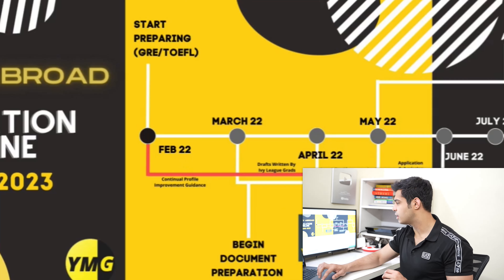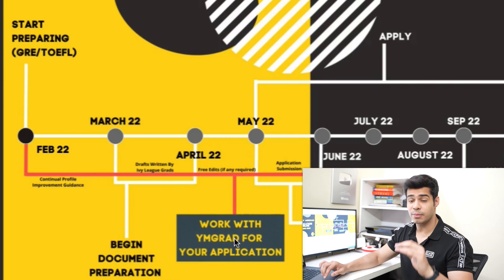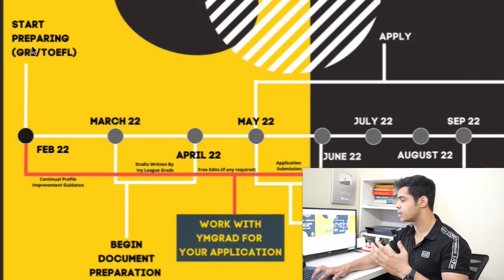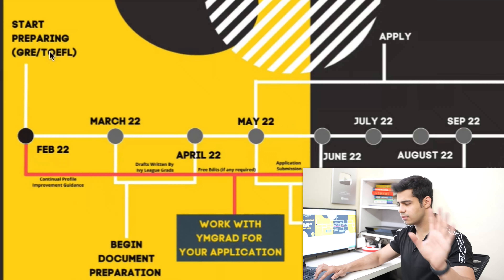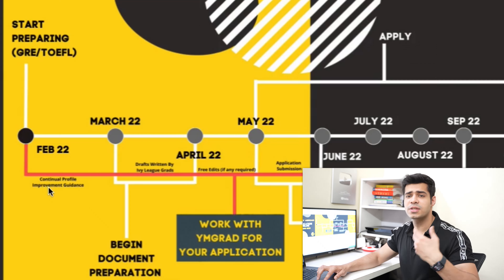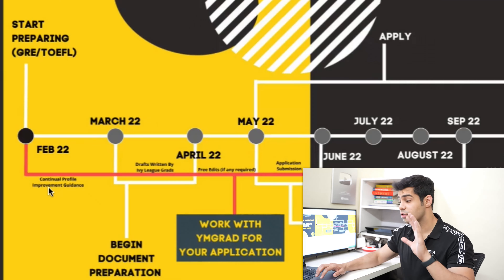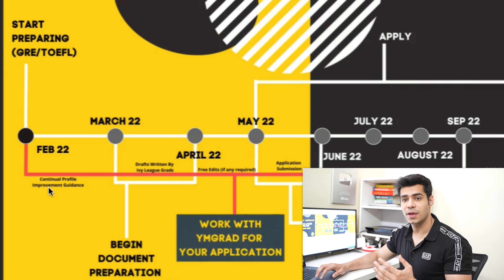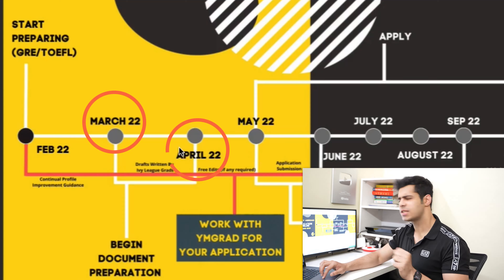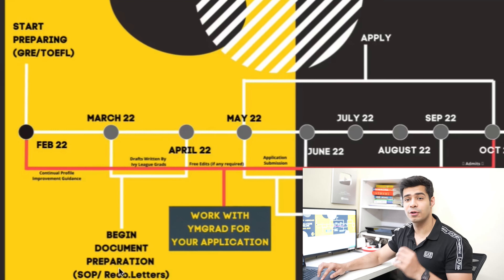So you start preparing for your tests. The red line on the timeline shows the perks of working with us in case you're considering it — we focus on continuous profile improvement guidance since you have a couple of months. In parallel, during March and April, you not only prepare for the GRE and TOEFL, but you also start working on your SOPs and LOAs.